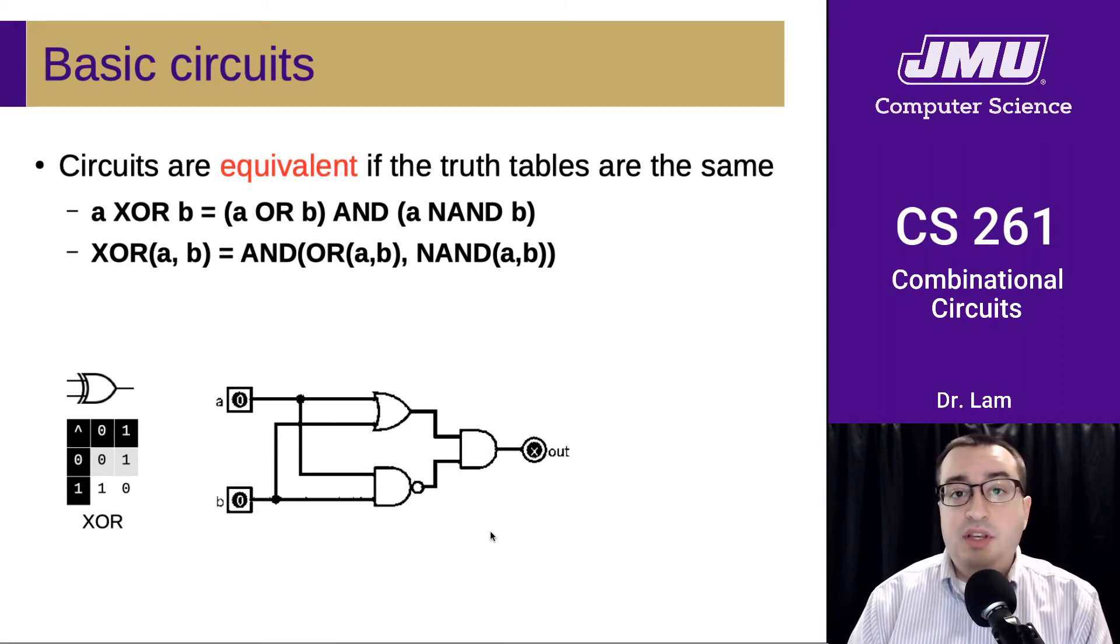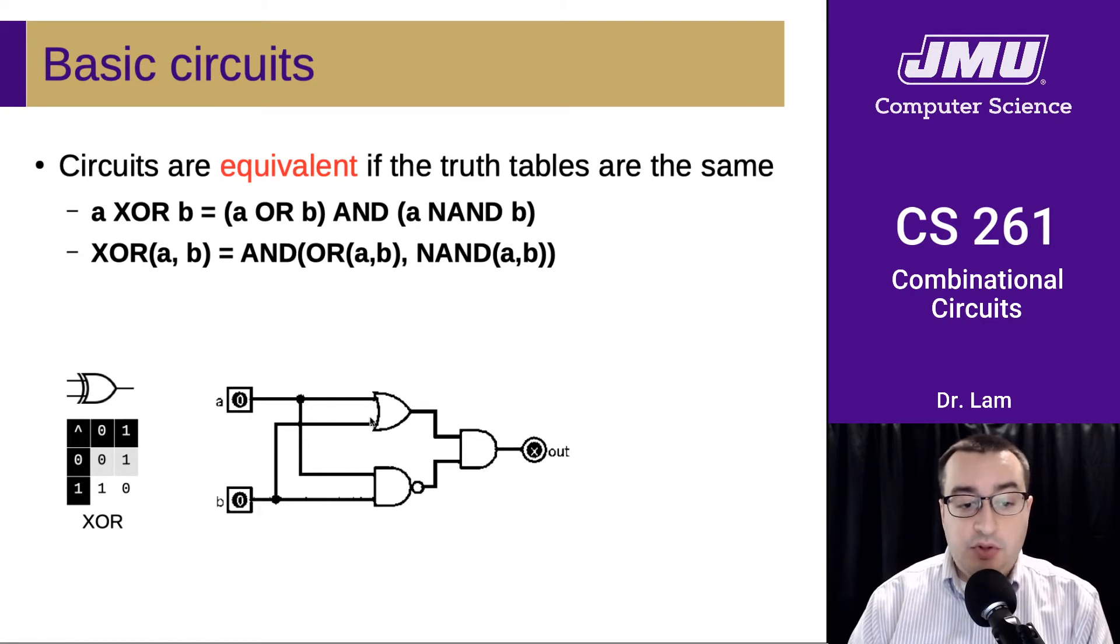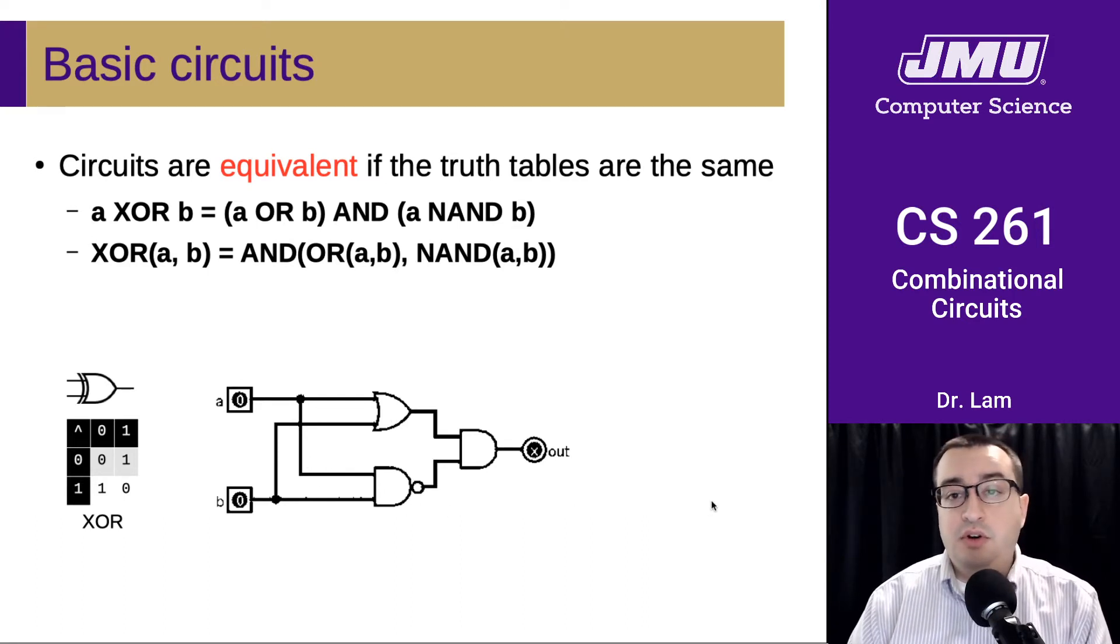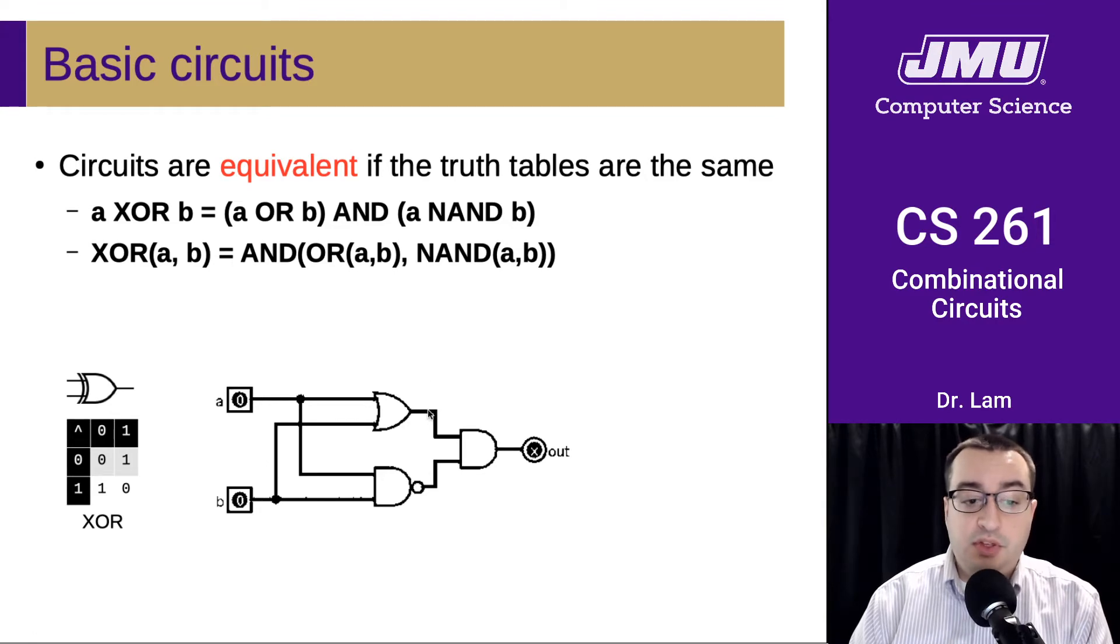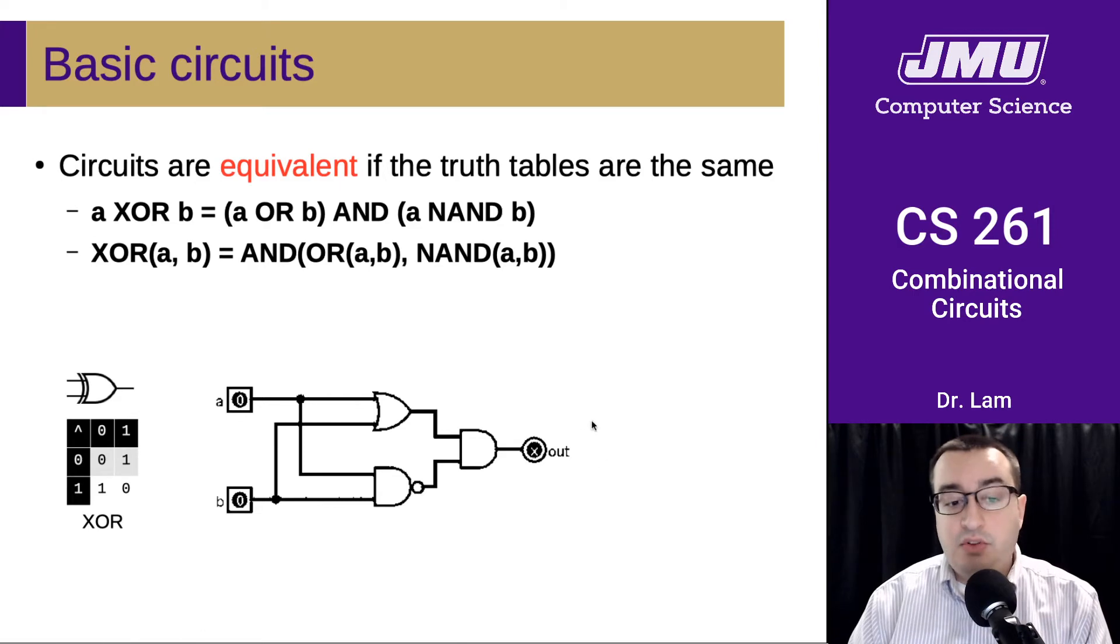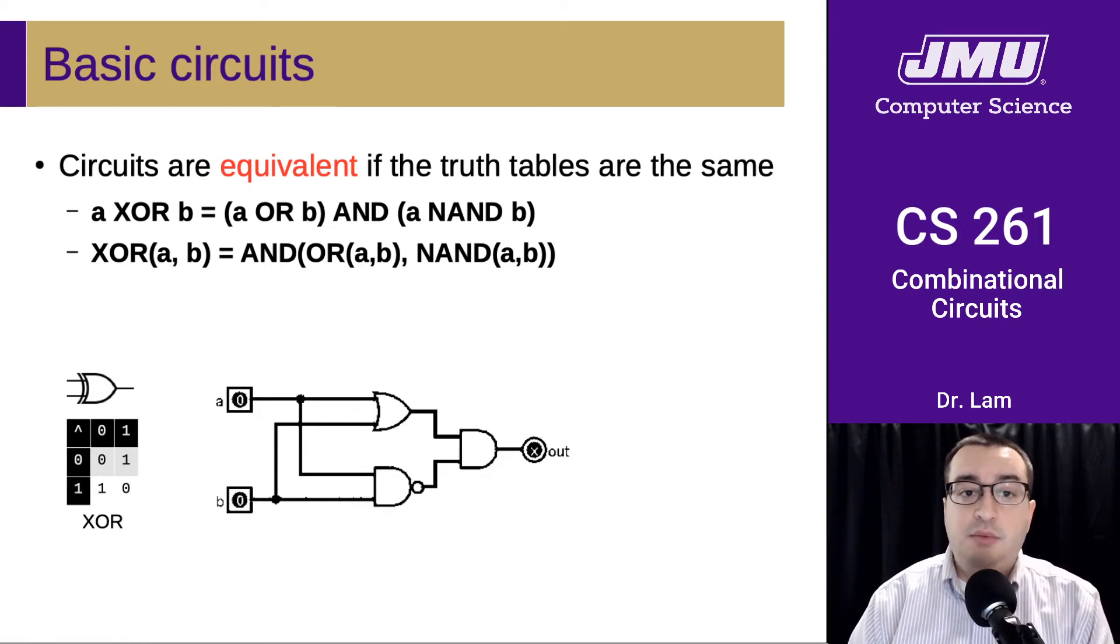And so the way that we would test this is to look at the truth tables. So we have A and B both going into this OR gate. And then we have A and B also going into this NAND gate. So the first thing we would do in order to verify this is to compute what the truth table would be for this signal coming out of the OR gate and what this signal would be coming out of the NAND gate. Once we did that, we could use those truth tables to assemble the truth table for the final output. So it would be worth pausing the video at this point and working that out on your own and confirming that the output that you get is equivalent to the truth table for XOR.